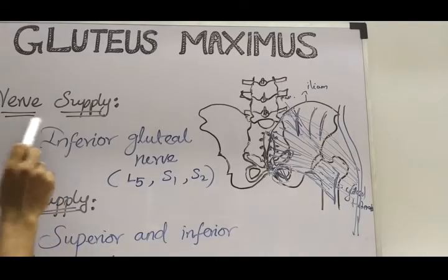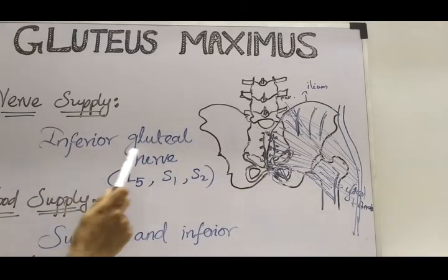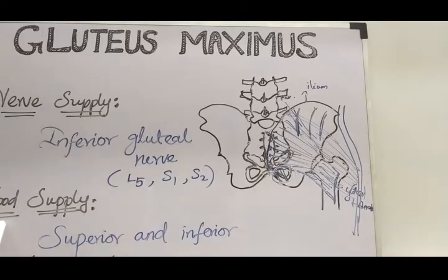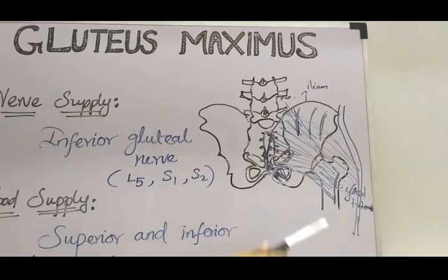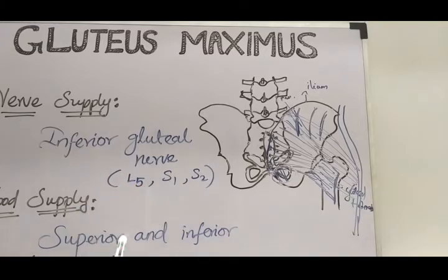The nerve supply to the gluteus maximus muscle is the inferior gluteal nerve, which comes from the sacral plexus, with root values L5, S1, and S2. The blood supply to the muscle is given by the superior and inferior gluteal arteries. All these structures are present under the cover of the muscle — under the gluteus maximus there will be muscles, bones, nerves, and blood vessels.